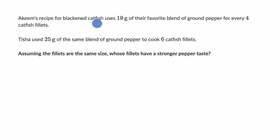We're told that Akeem's recipe for blackened catfish uses 19 grams of their favorite blend of ground pepper for every four catfish fillets. Tisha uses 25 grams of the same blend of ground pepper to cook six catfish fillets. Assuming the fillets are the same size, whose fillets have a stronger pepper taste?